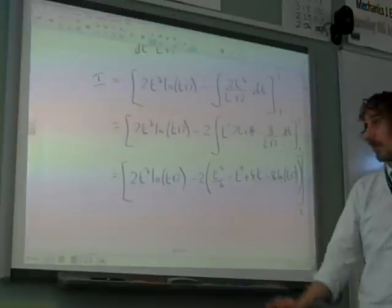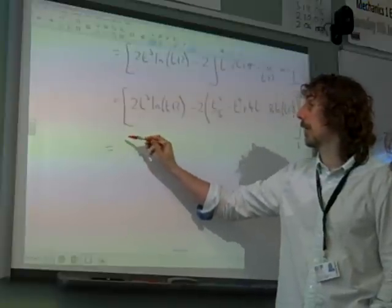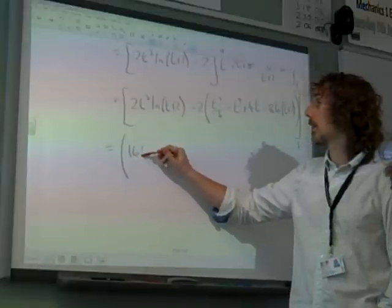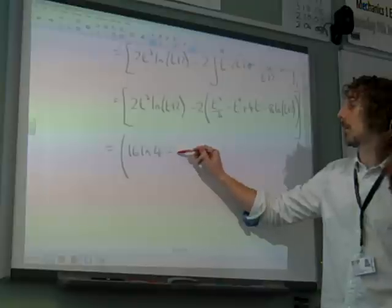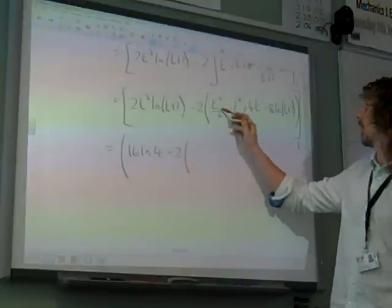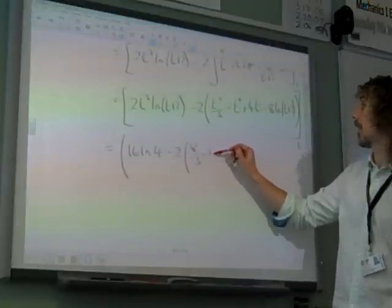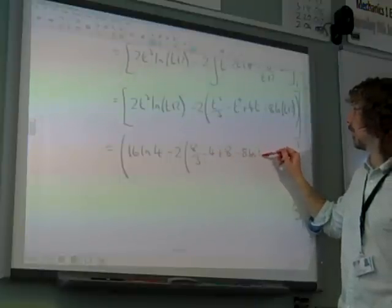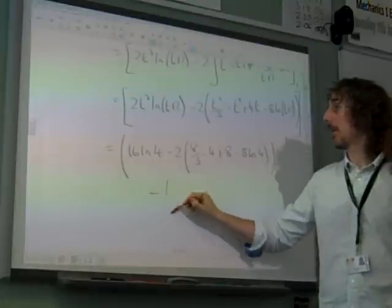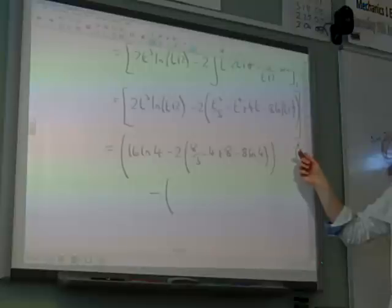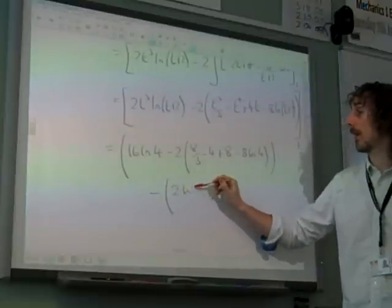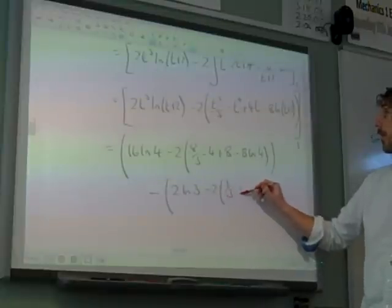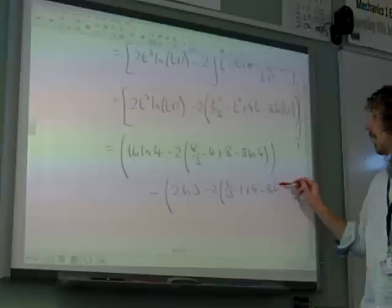At which point we're ready to sub in some numbers. Subbing in 2 and subbing in 1 and hopefully this will all tie up now. So, if we sub in 2, we get 2 times 8 ln 4 minus twice, this is 8 over 3, minus 4 plus 8 minus 8 ln 4. And then we're going to sub in 1, which was the lower limit. It gives us 2 ln 3 minus twice, a third, minus 1, plus 4, minus 8 ln 3.